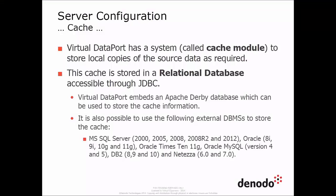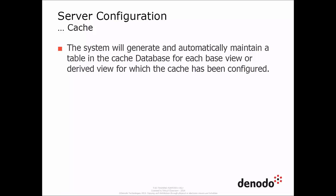Let's talk about the server cache. Virtual Data Port incorporates a cache module to store in a JDBC database local copies of the data retrieved from the data sources. Although Virtual Data Port embeds an Apache Derby database, there are different external database management systems recommended for the cache. By default, views do not store data in the cache.